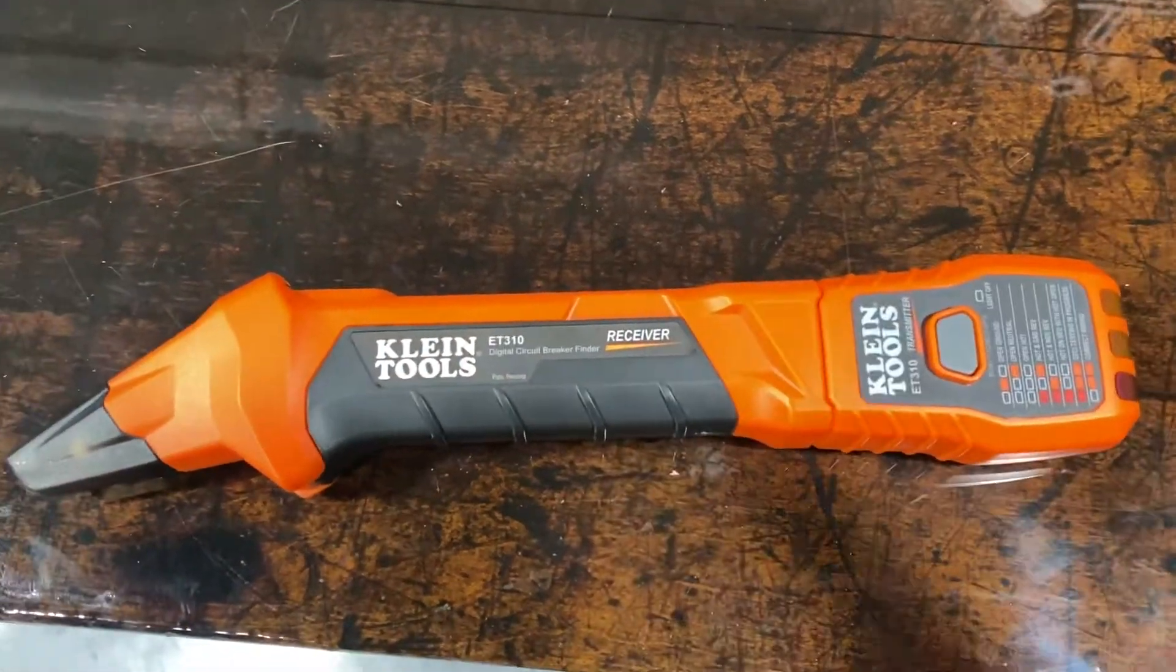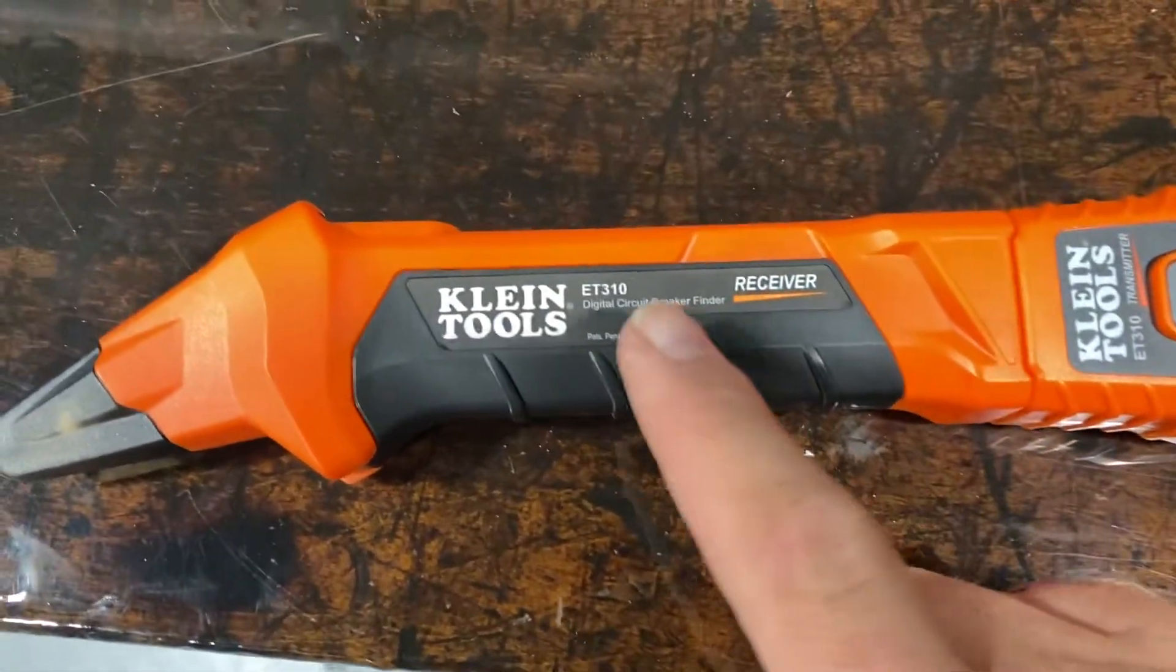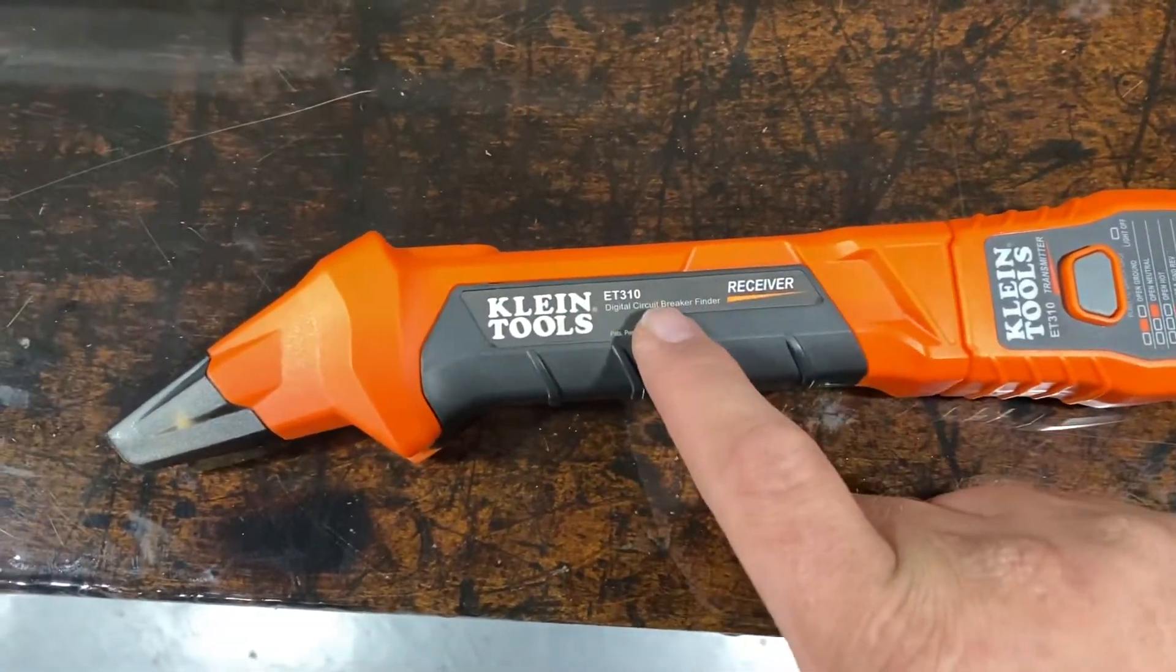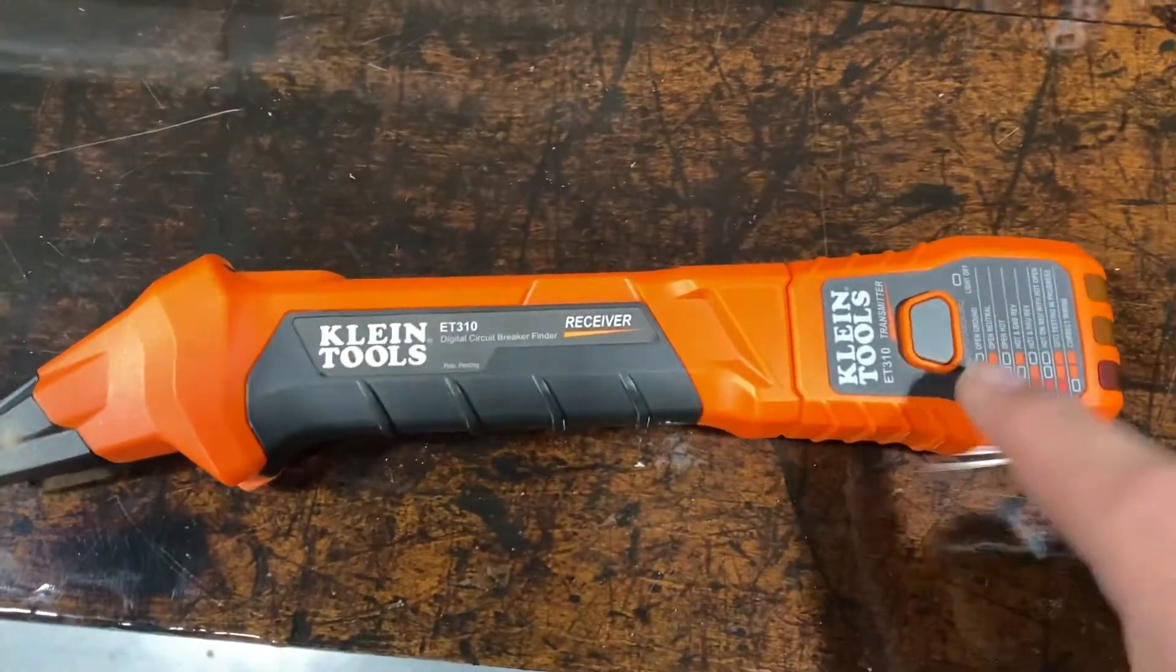So you got to get one of these totally awesome $39 Klein ET310 circuit finder. It's two pieces: receiver and tester/finder. We're going to locate the circuit for this workshop.